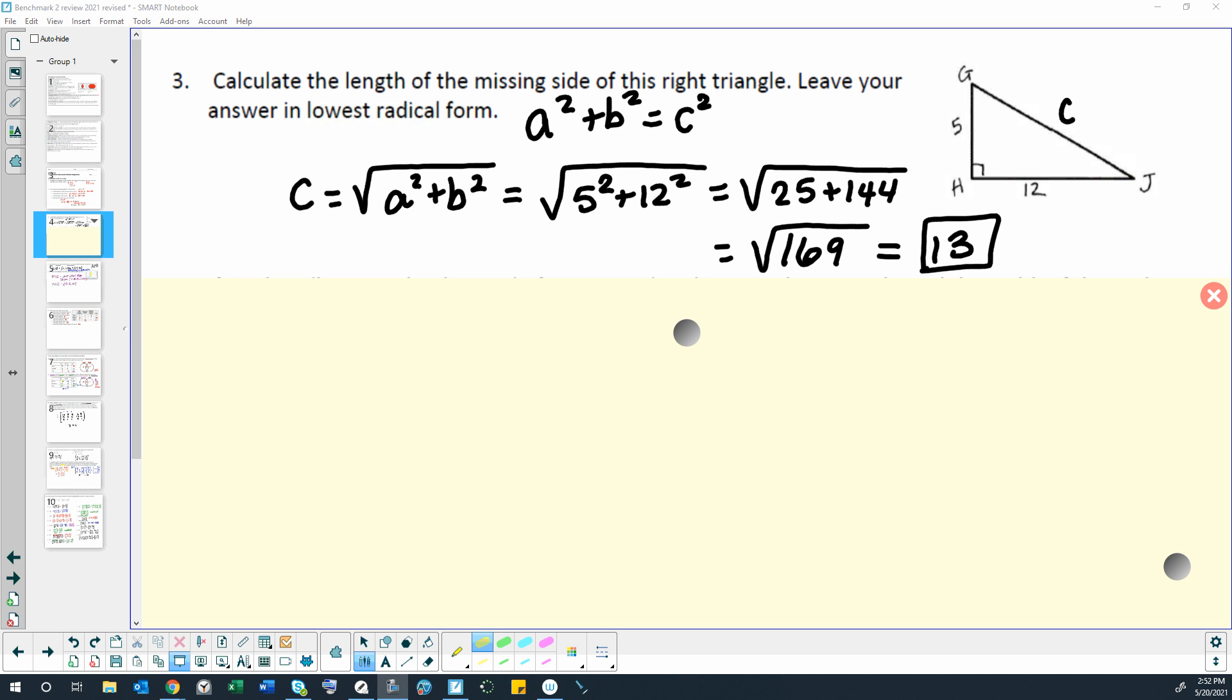Welcome to Help with Question 3 on the Modern Math Benchmark Semester 2 Post-Test. This question says, calculate the length of the missing side of this right triangle. Leave your answer in lowest radical form.